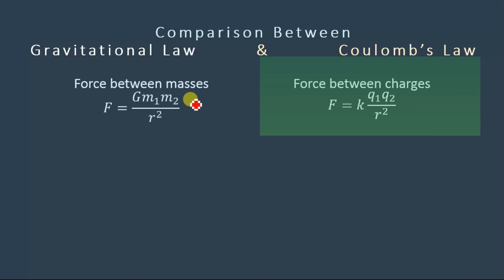Both of these laws - gravitational law which is F equals G M1 M2 divided by R square, and Coulomb's law which is F equals K Q1 Q2 divided by R square - are known as inverse square law.